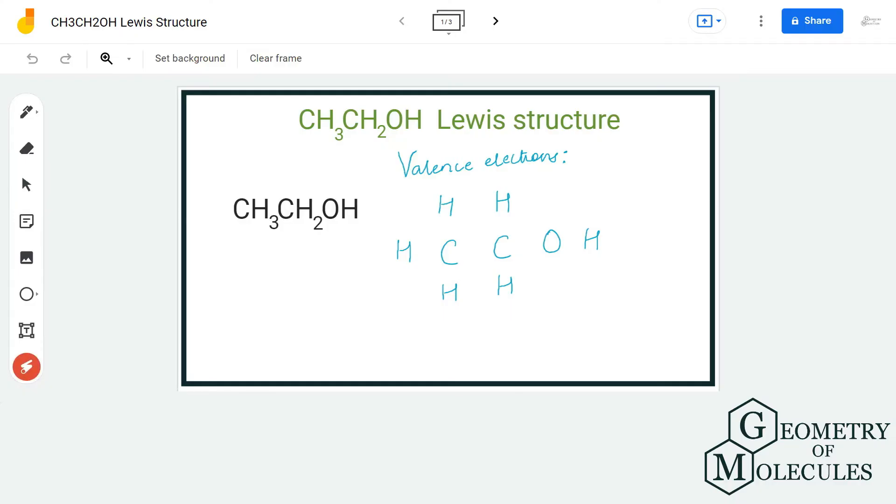Hi guys, welcome back to our channel. In today's video, we are going to help you with a CH3CH2OH Lewis structure. It is a chemical formula for ethanol and it comprises two carbon atoms, six hydrogen atoms, and an OH or alcohol group.